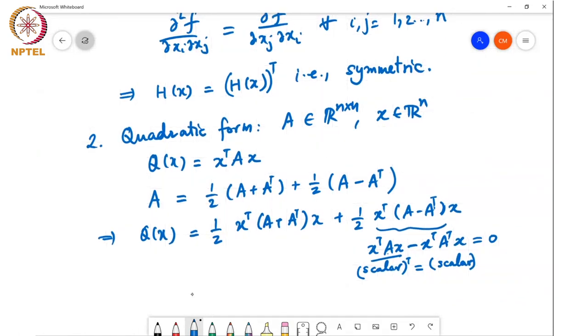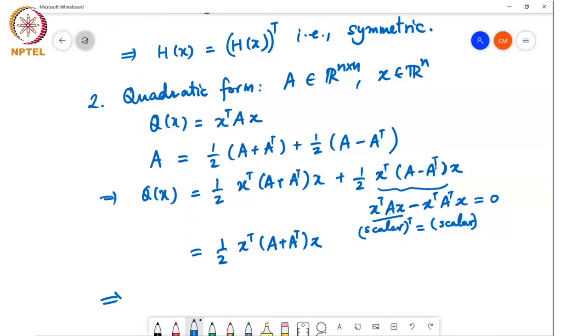So Q(x) is actually equal to half x^T(A + A^T)x. What that means is that A and one half (A + A^T) generate the same quadratic form.